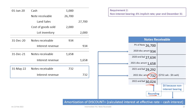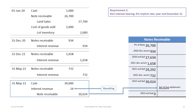The final entry records the settlement of the note. Cash received from the customer is $30,000. The balance in the notes receivable account is $30,024, which we have to eliminate. Because the difference is due to rounding in the interest calculations, we put that back against interest revenue to reduce it slightly, and then we've taken care of it.